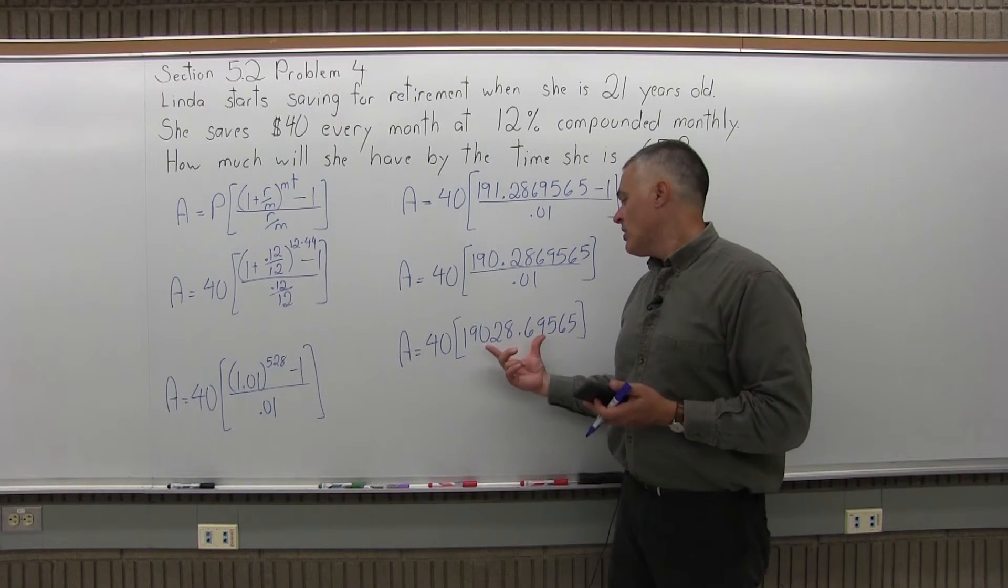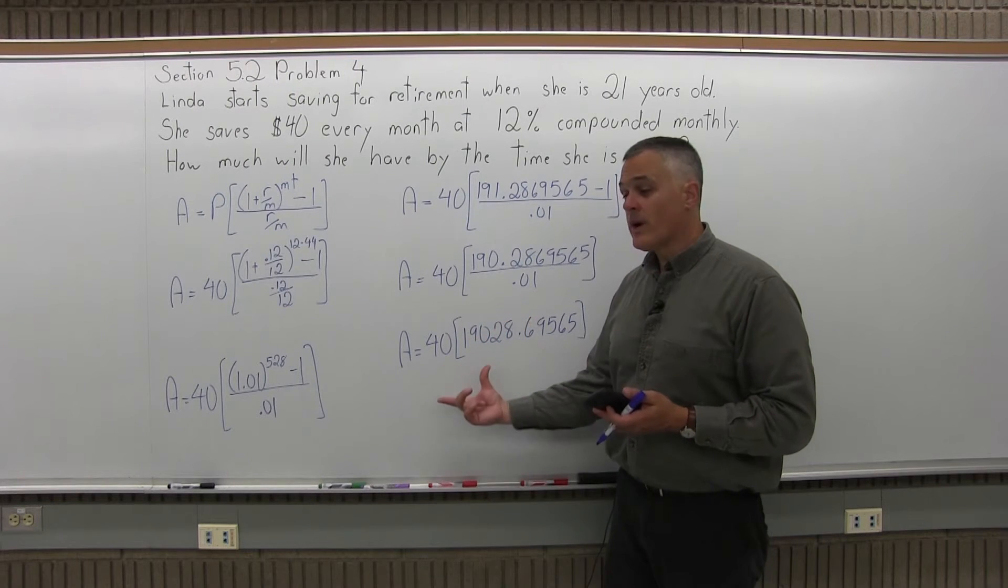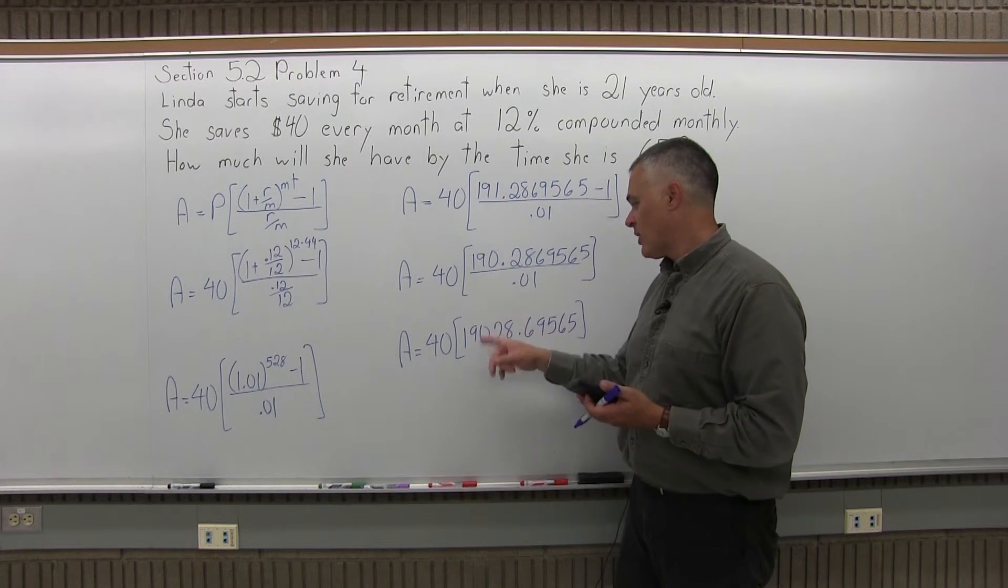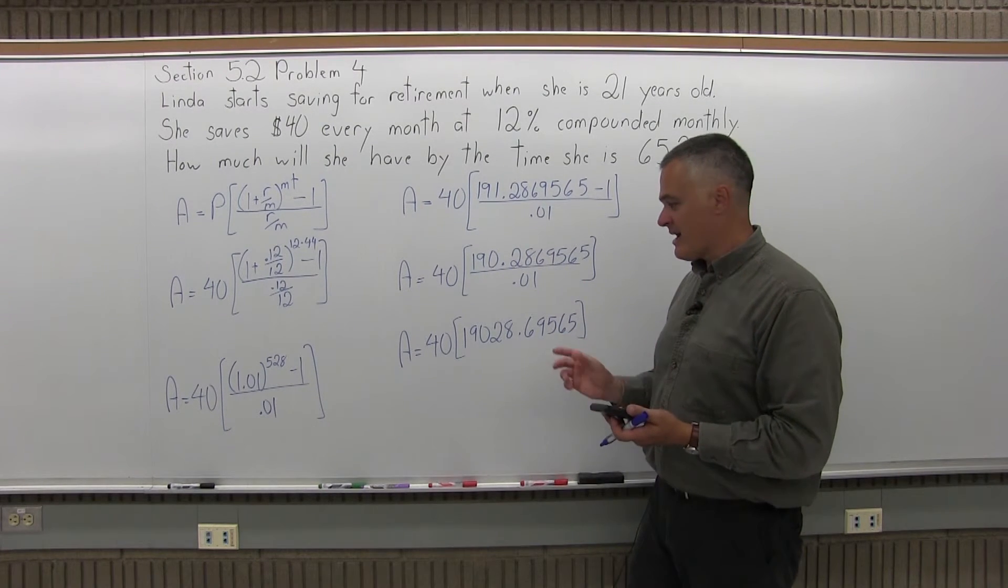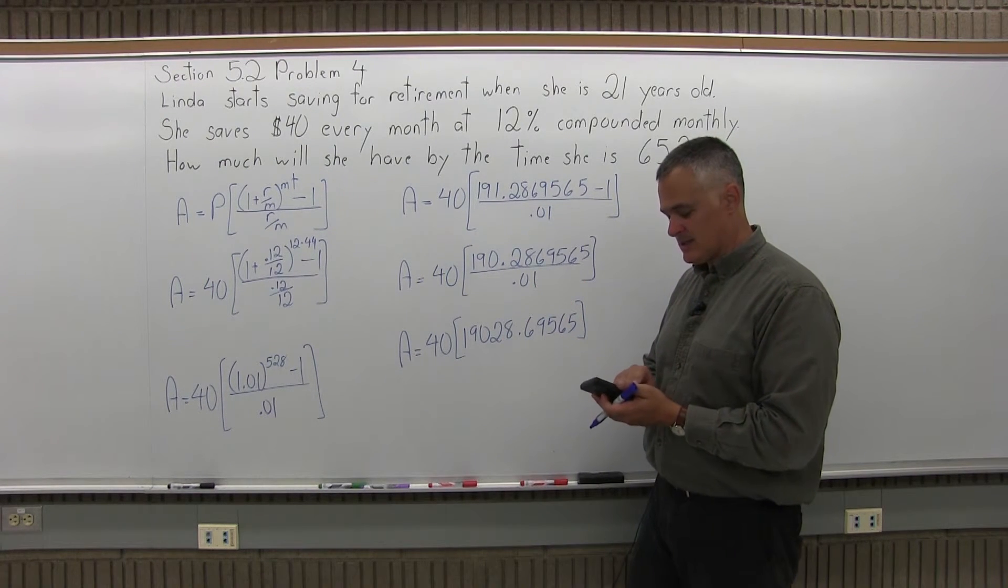And that number is times 40. So I have the number that I have for the brackets, 19,028.6956 on the screen of my calculator, and I'll do times 40 because there's a times 40 in front of it.